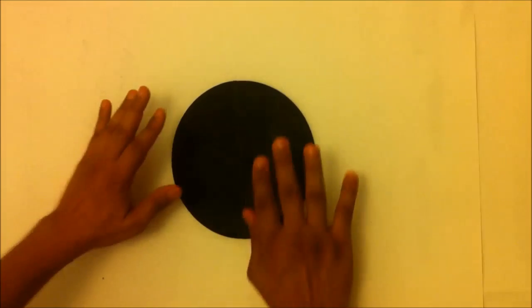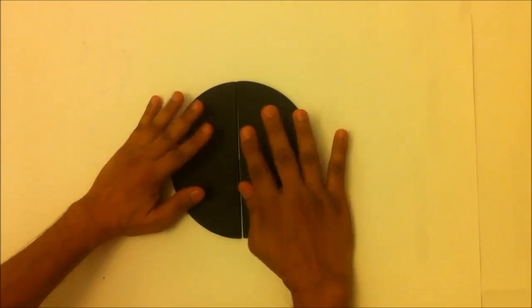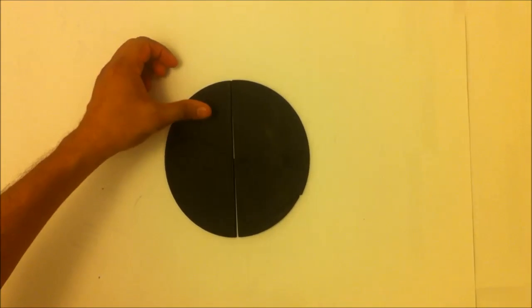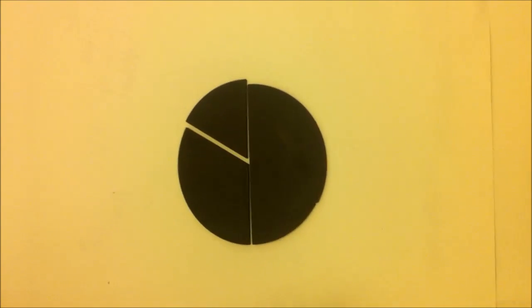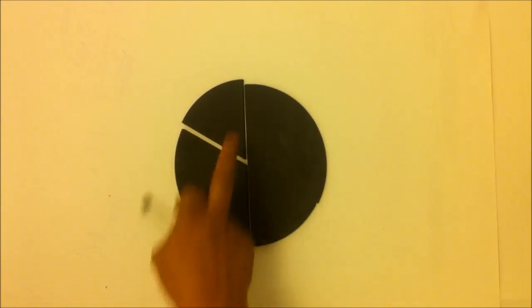This is a circle. Let's see its different parts. We can cut it into two and each part is a half circle. We can separate this part and it looks like a typical part of a pizza with two straight